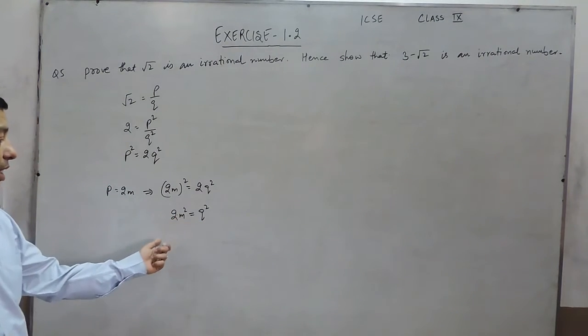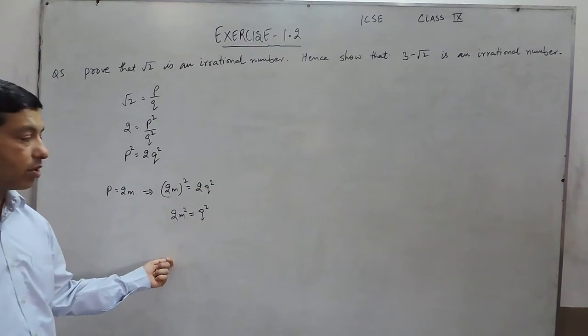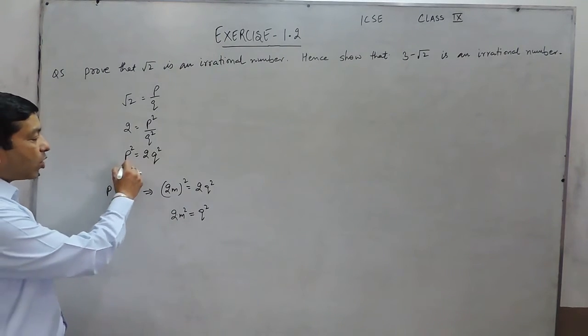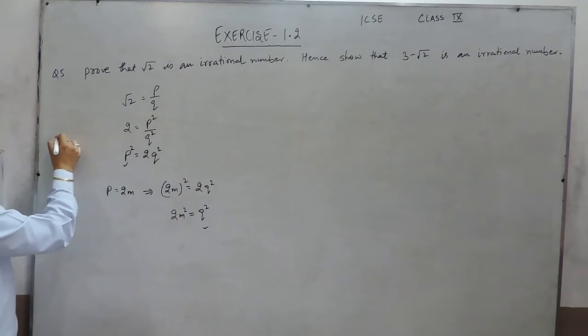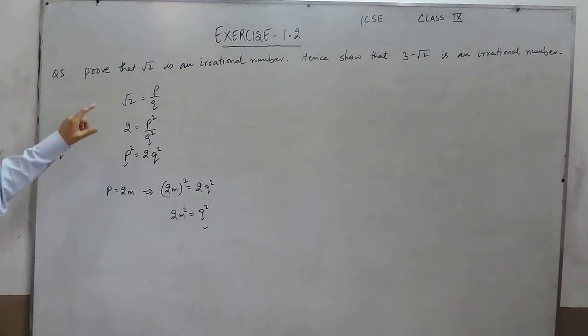That means 2m² is divisible by 2, which means q² is also divisible by 2. That means p and q both have a common factor 2. And if anything is written in the form of p upon q where they do not have any common factor except 1, then only it is a rational number. But here they have a common factor 2, which means it is not a rational number, or it is an irrational number.